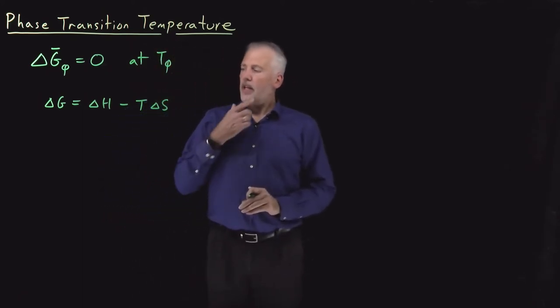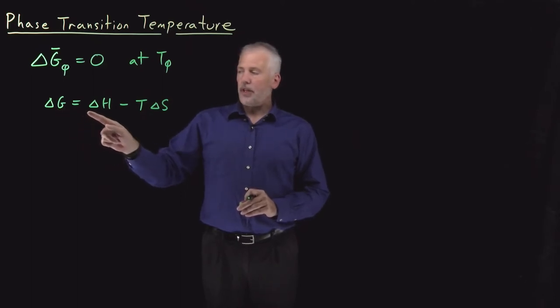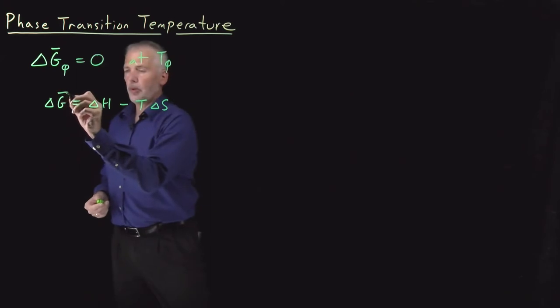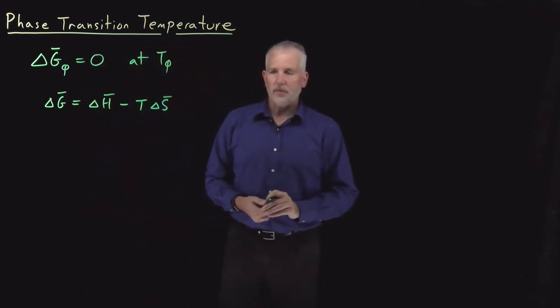If the temperature is constant, then we can say the change in Gibbs free energy is the change in the enthalpy minus T times the change in the entropy. That's true for molar quantities as well as for the extensive quantities.